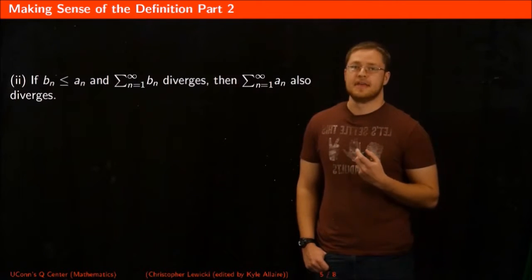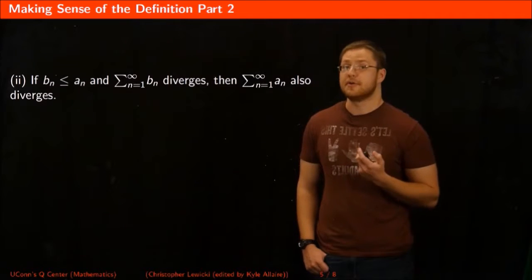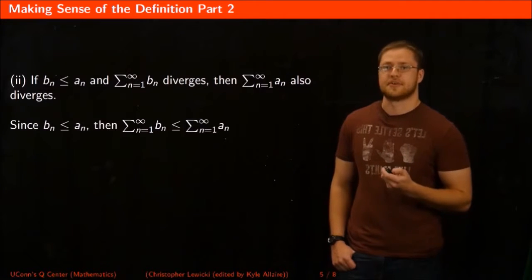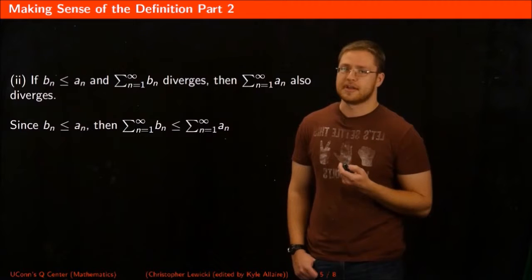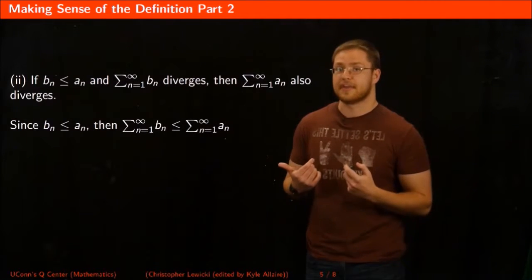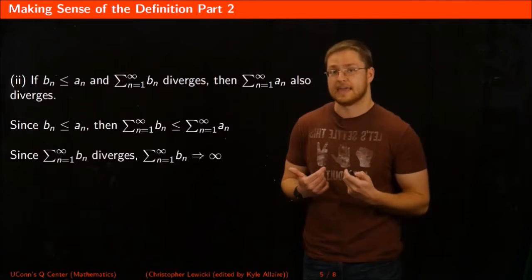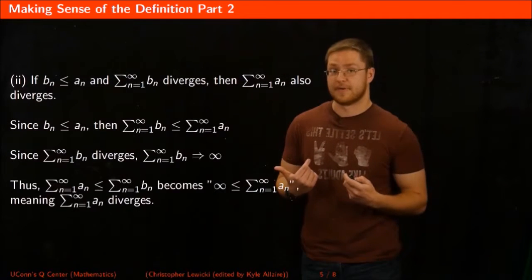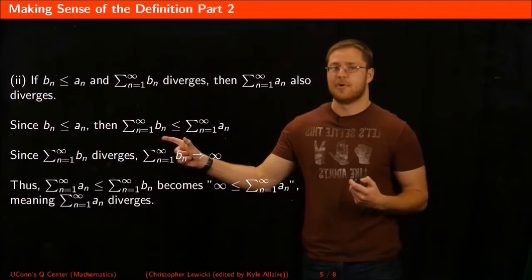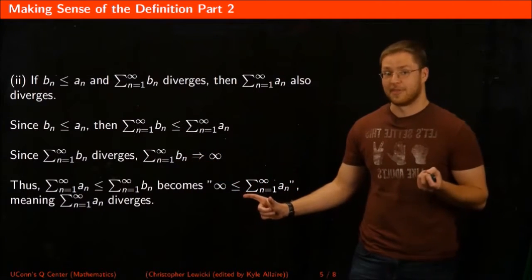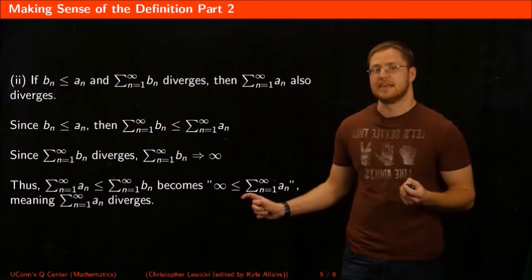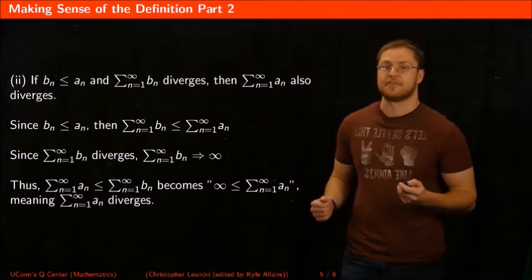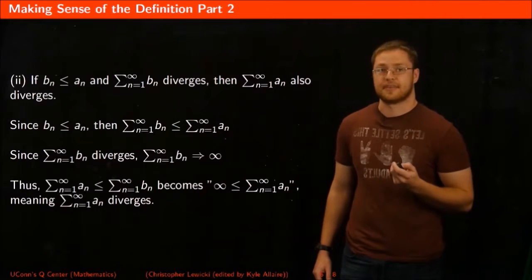As for the other comparison: if we know that Bn is always less than or equal to An, and we know that the series of Bn diverges, then the series of An also has to diverge. If Bn is always less than or equal to An, then the series of Bn is less than or equal to the series of An. Since the series of Bn diverges — meaning it goes to infinity — that makes the series of An also go to infinity, which by definition means the series An diverges.